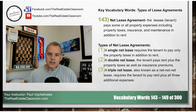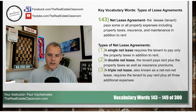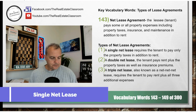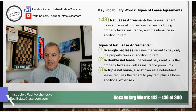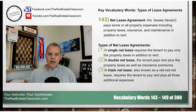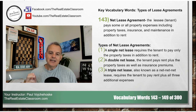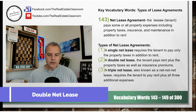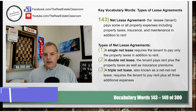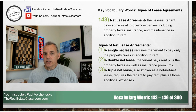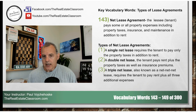There are three types of net lease agreements you have to be familiar with. Number one is a single net lease, which requires the tenant to pay property taxes in addition to that monthly or periodic rent. A double net lease is where the tenant is required to pay the property taxes and the insurance premiums for that property, in addition to any monthly or periodic rent.